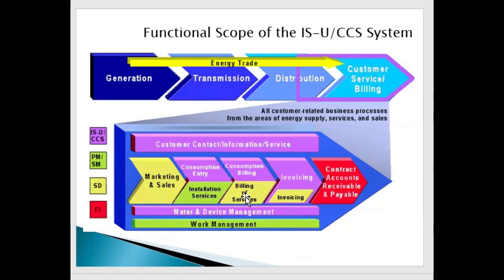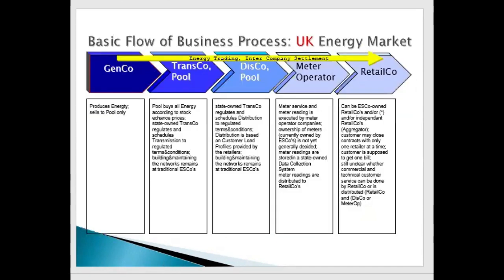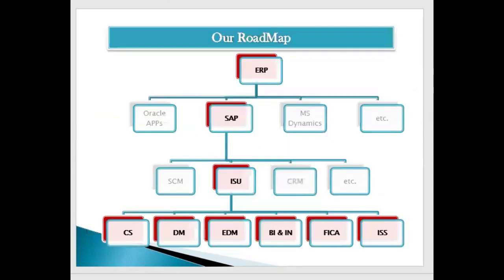That doesn't mean SD is not there — if you want to create a service order or sales order, you can use SD, and the invoice from SD can be integrated into ISU invoicing. We also have Customer Contact Information Services — currently SAP CS is somewhat obsolete and integrated into CRM; some cases use third-party systems like Salesforce for customer services. For device maintenance, we have SAP ISU DM (Device Management), which handles devices in the value chain. In SAP there are two kinds of things: modules and solutions.